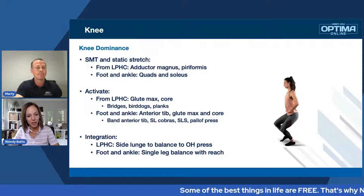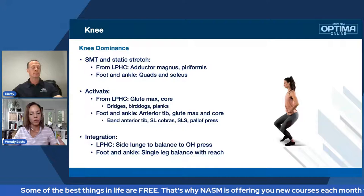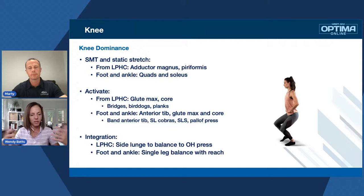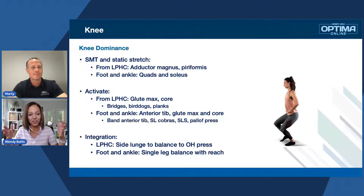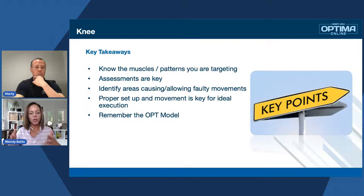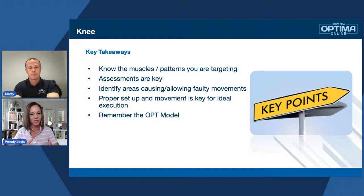For integration with knee dominance, if compensation comes from the lumbopelvic hip complex, do exercises like a side lunge to balanced overhead press — working more in the frontal plane versus keeping everything sagittal. For foot and ankle, do a single leg balance with reach. You're going to see many of the same exercises across topics, but they serve a huge purpose: activating small muscles and retraining the brain on how to coordinate movement. You're only as strong as you are stable — that's why we focus on stabilization and compensations first. You're only as powerful as you are strong. That's why the OPT model works.